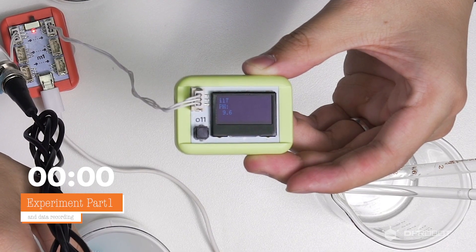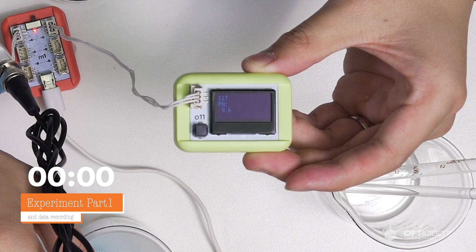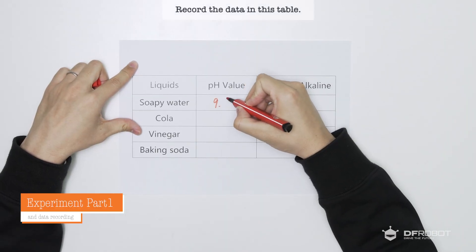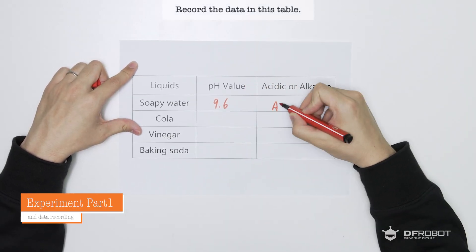Okay let's see what we've got. Yeah it's a 9.6, more than 7. I'm going to record it in this table. Soapy water has a pH of 9.6. It's an alkaline substance.